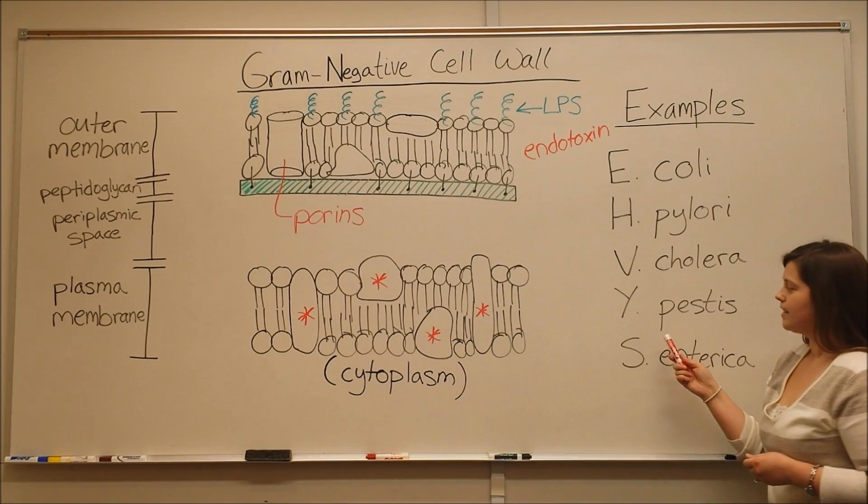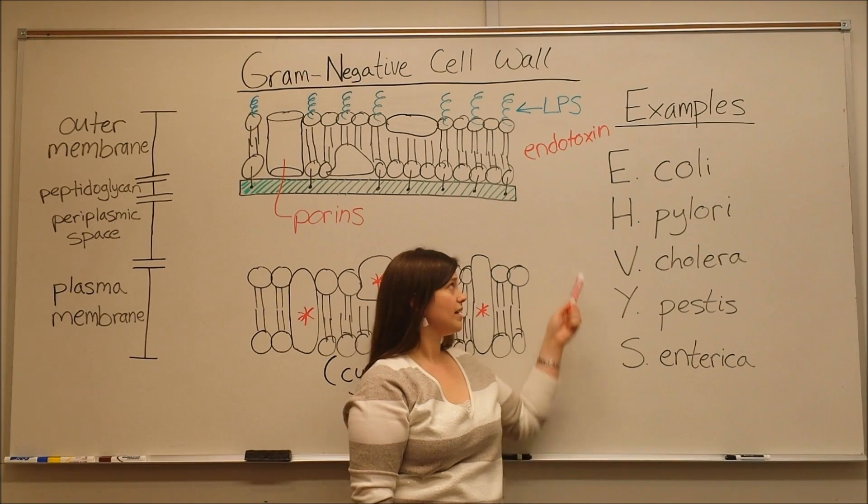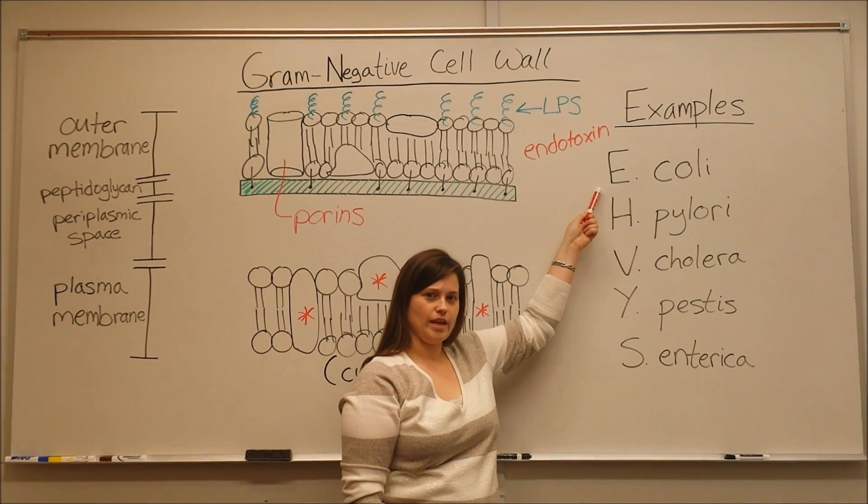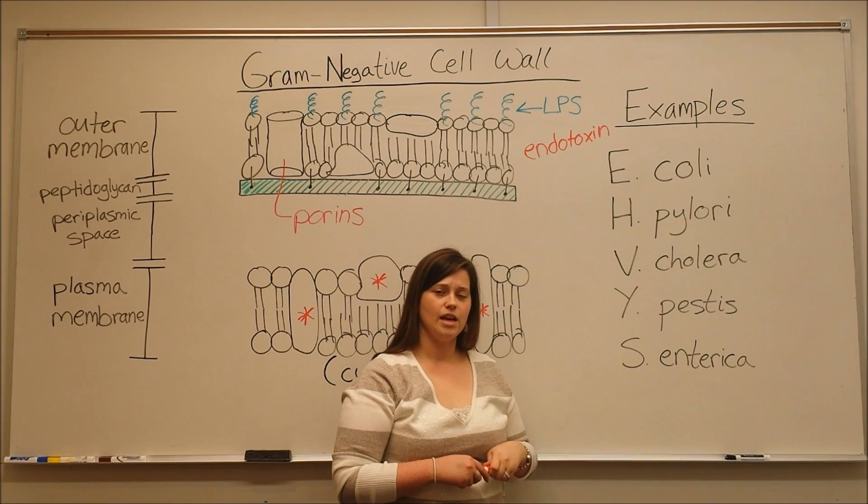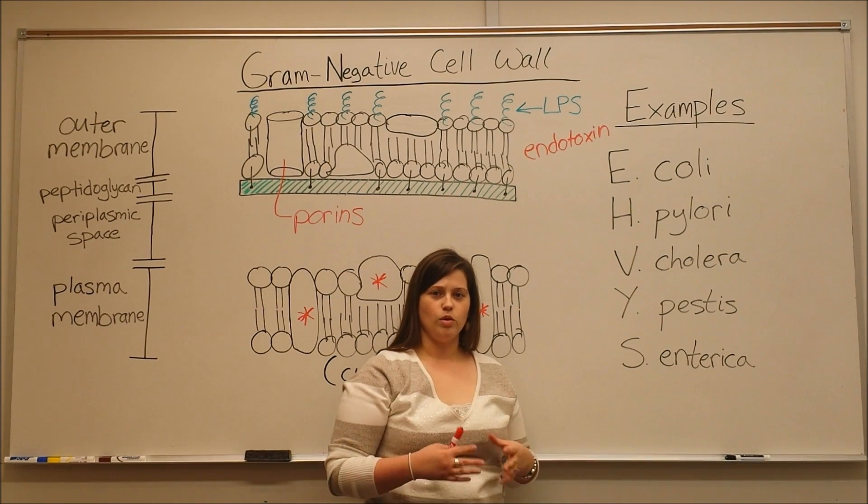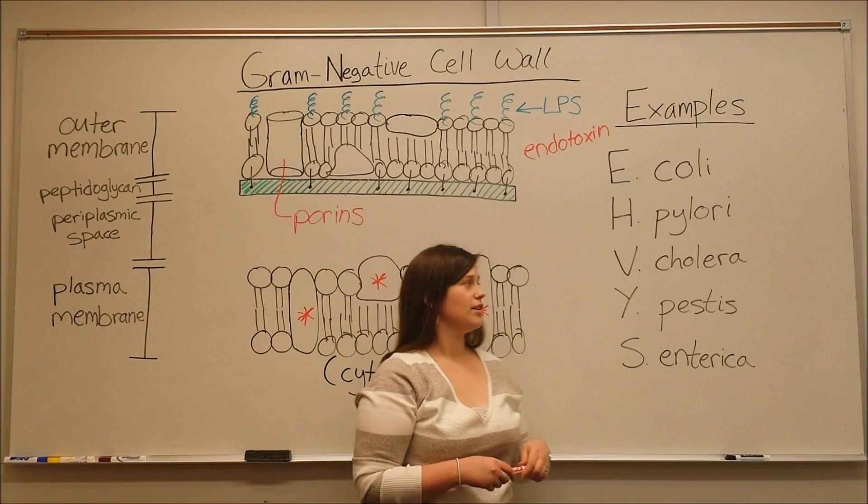Now let's look at some examples of gram negative bacteria. You've probably heard of a lot of these. E. coli is one that we hear about a lot as a pathogen because it can cause food poisoning, but it's actually a normal commensal part of the human flora, so it's not always pathogenic.